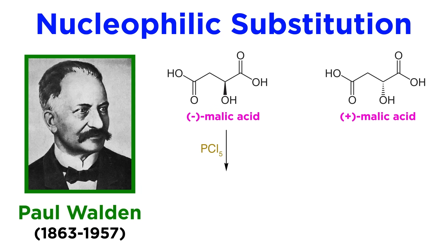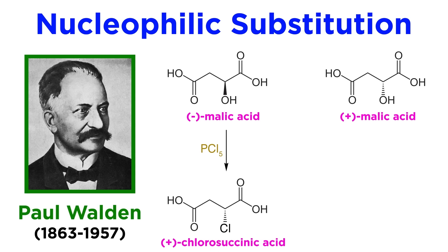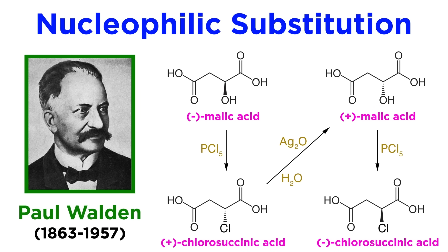When treating minus malic acid with PCl5, he got plus chlorosuccinic acid. Then upon treatment with aqueous Ag2O, this yielded plus malic acid. Similarly, plus malic acid could be treated with PCl5 to yield minus chlorosuccinic acid, which could be treated with aqueous Ag2O to give minus malic acid again.